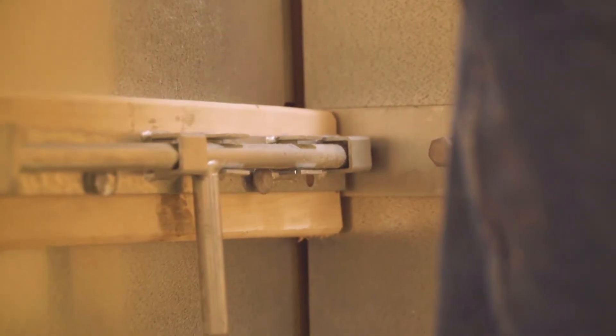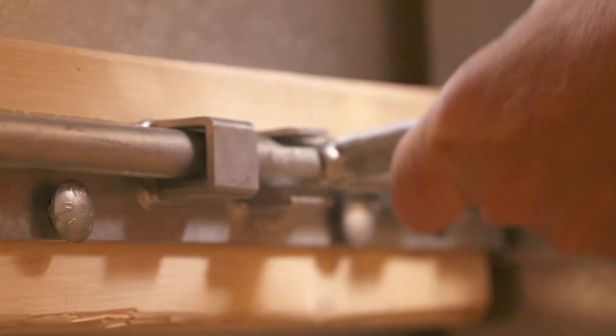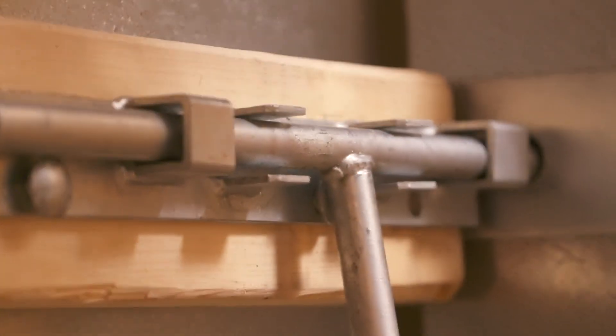Position each angle so the slide bolt of each latch meets with one of the heavy angle's holes on the jamb. The gate latch bolts will enter these holes to lock the door.